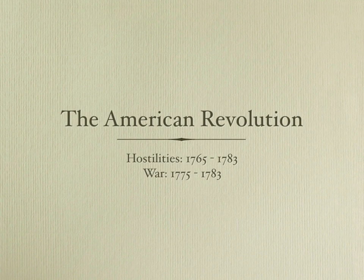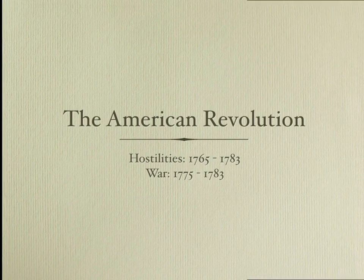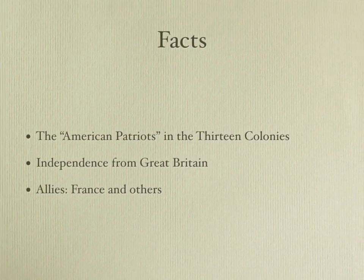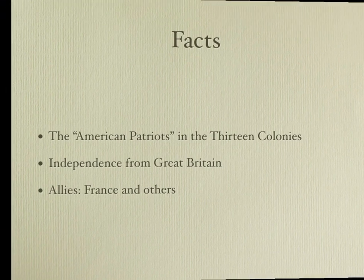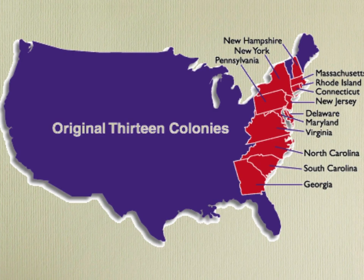The American Revolution — the time period your book will cover — runs from 1765 to basically 1783, with the actual fighting from 1775 to 1783. The people in the colonies who were fighting were called American patriots. We fought this war against Great Britain, with France and other countries as our allies. This map shows the colonies that fought in the revolution — these are colonies at this time period — and of course today all of these are part of the United States.